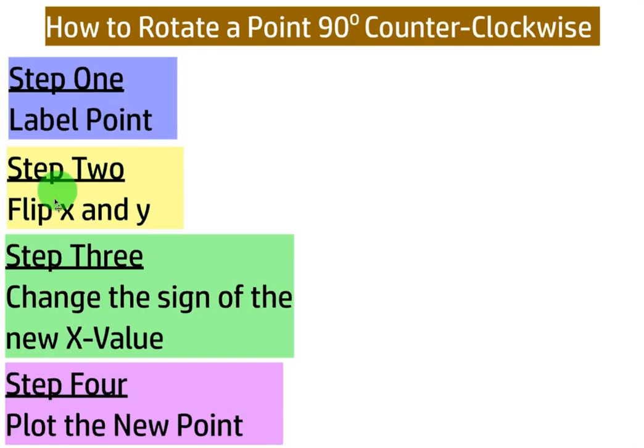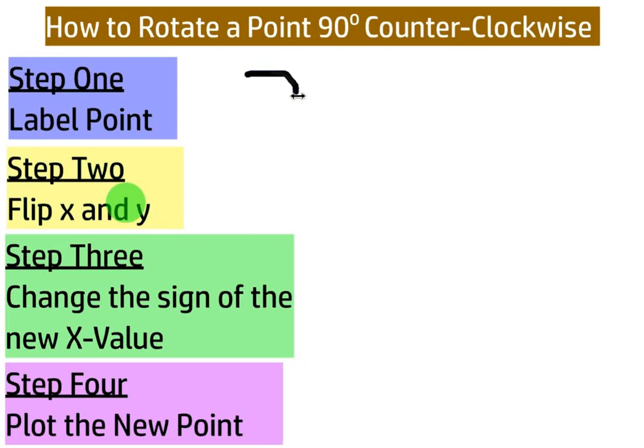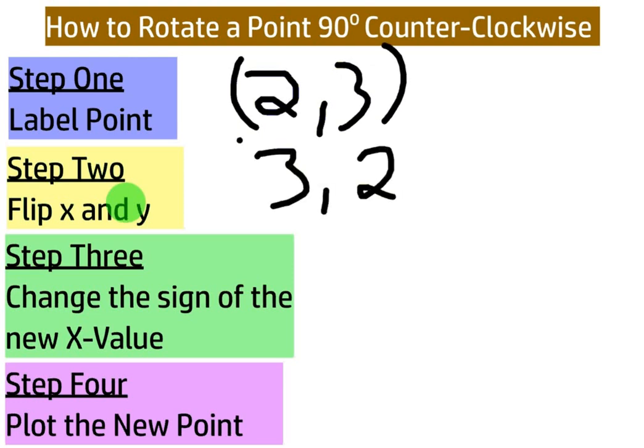Next step we're going to do is flip x and y. So x is going to become y, y is going to become x. So this is actually the same exact thing that we did before when rotating clockwise. Okay, so nothing's changed from steps 1 and 2.